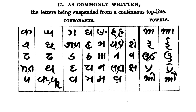Documents in Kaithi are traceable to at least the 16th century. The script was widely used during the Mughal period. In the 1880s, during the British Raj, the script was recognized as the official script of the law courts of Bihar. Kaithi was the most widely used script of North India west of Bengal.